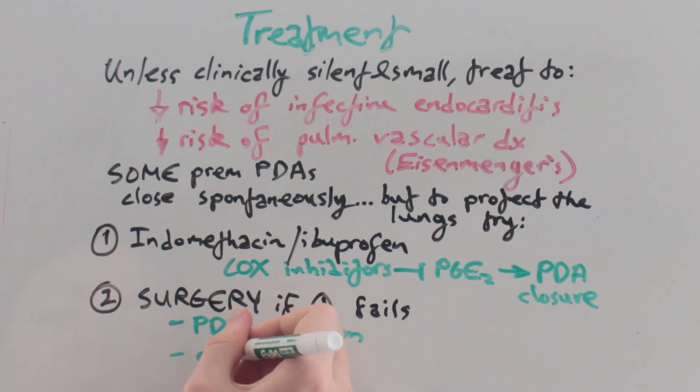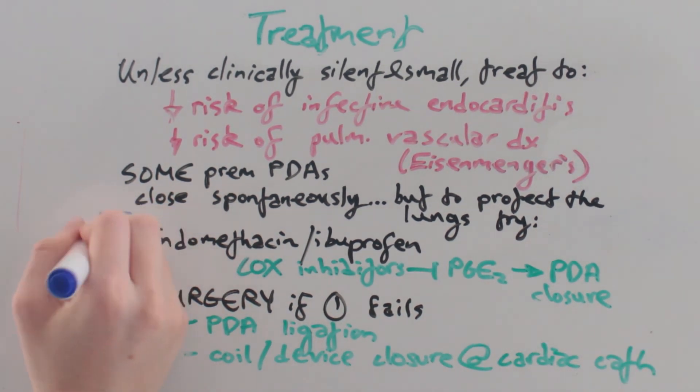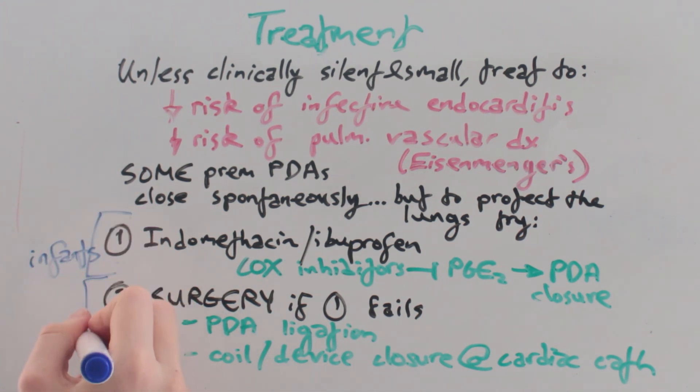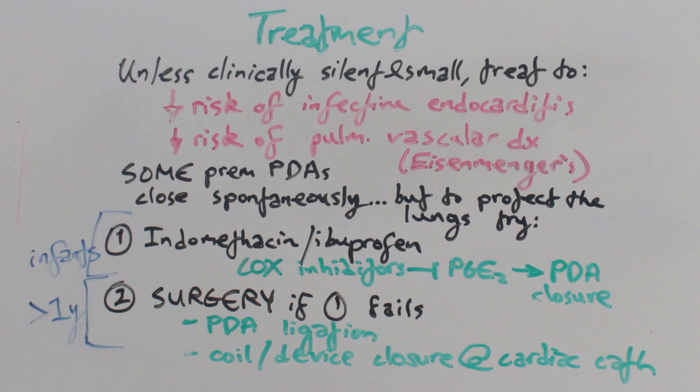This is either PDA ligation or coil device closure at cardiac catheterization. Medical treatment is for infants, while surgery is preferred in those over one year of age.